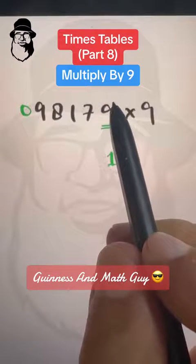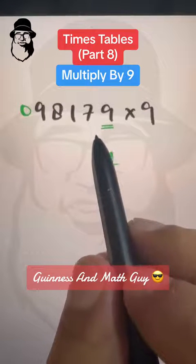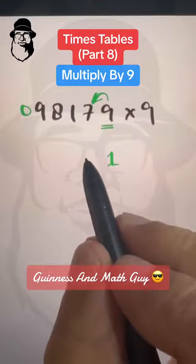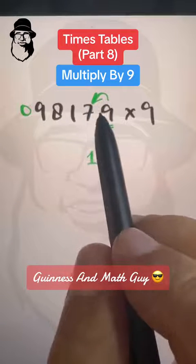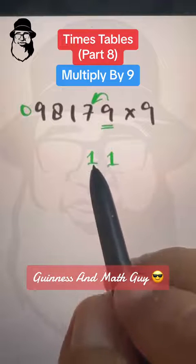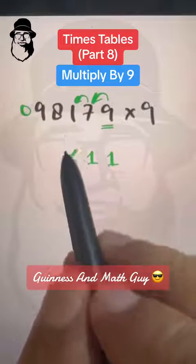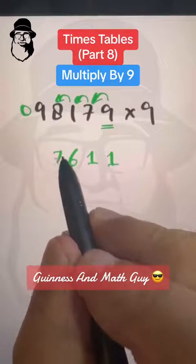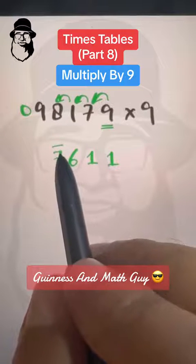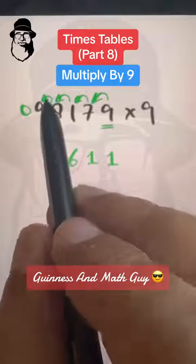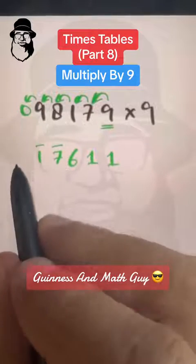There is a little difference in the first step: 9 minus 7 is 2, but we will write 1. The only difference in the first subtraction is you have to decrease 1 from the result. After that: 7 minus 1 is 6, we write 6. Then 1 minus 8 is bar 7, or negative 7, because 8 minus 1 is 7. Then 8 minus 9 is bar 1, and 9 minus 0 is 9.